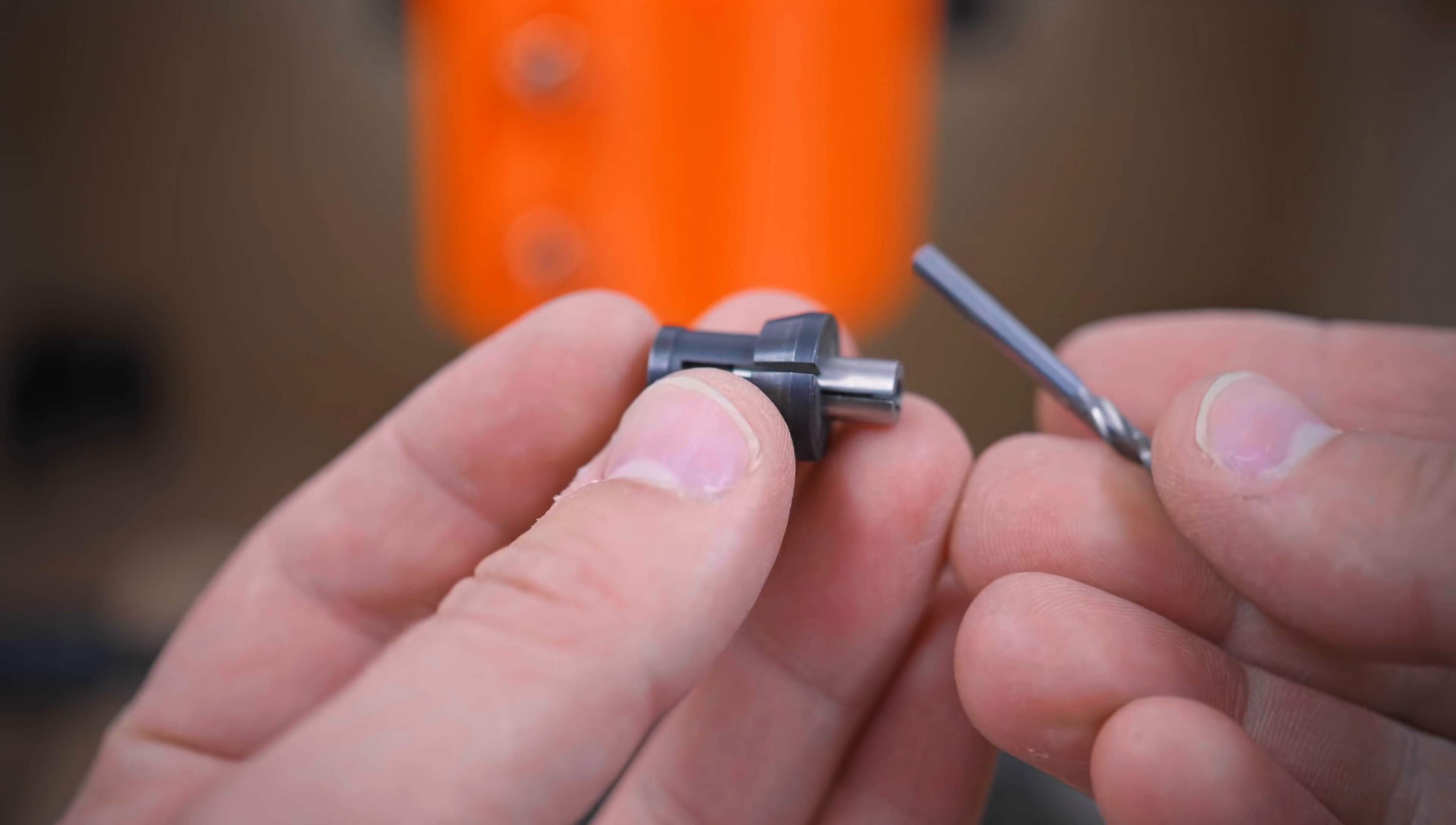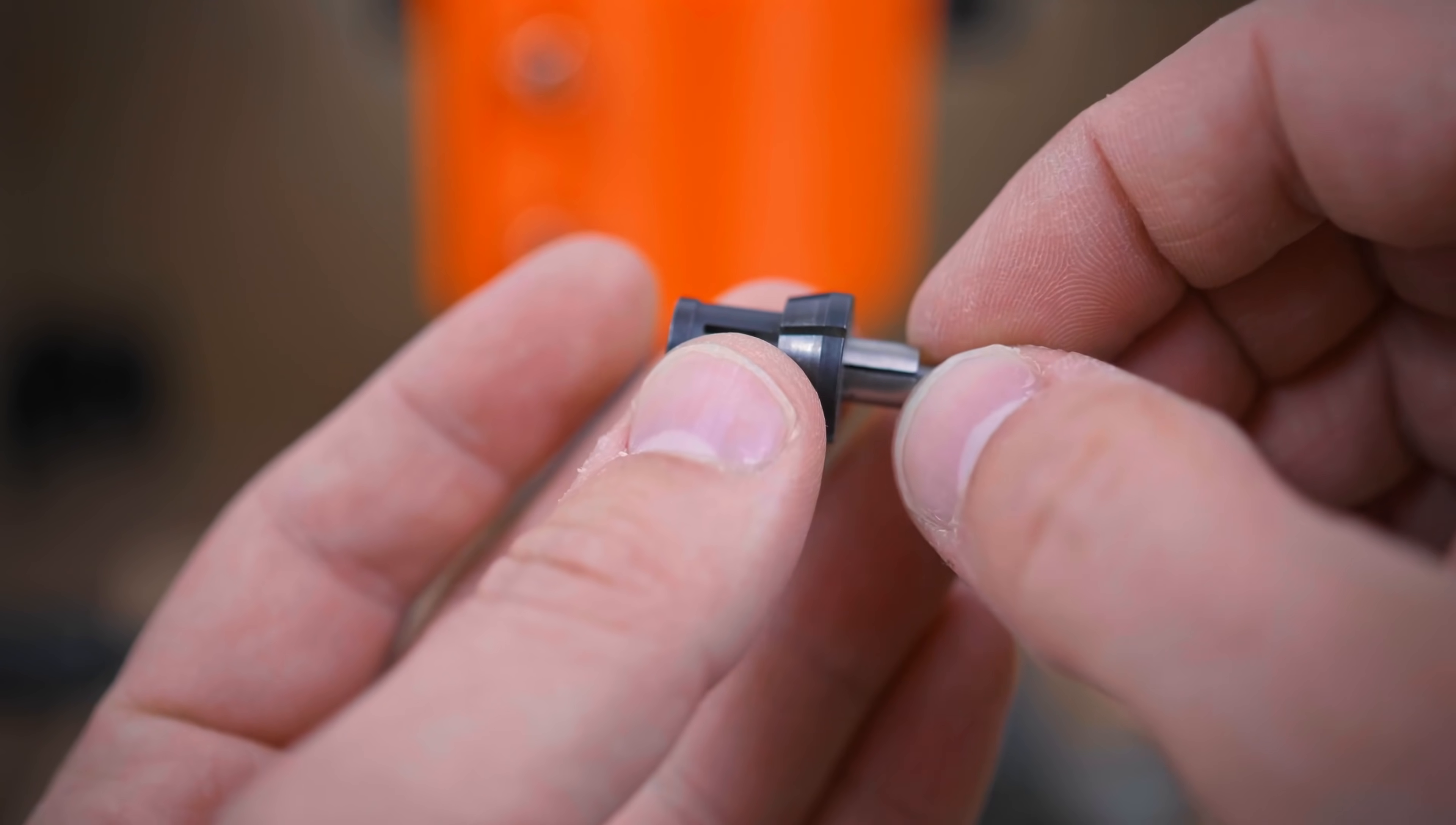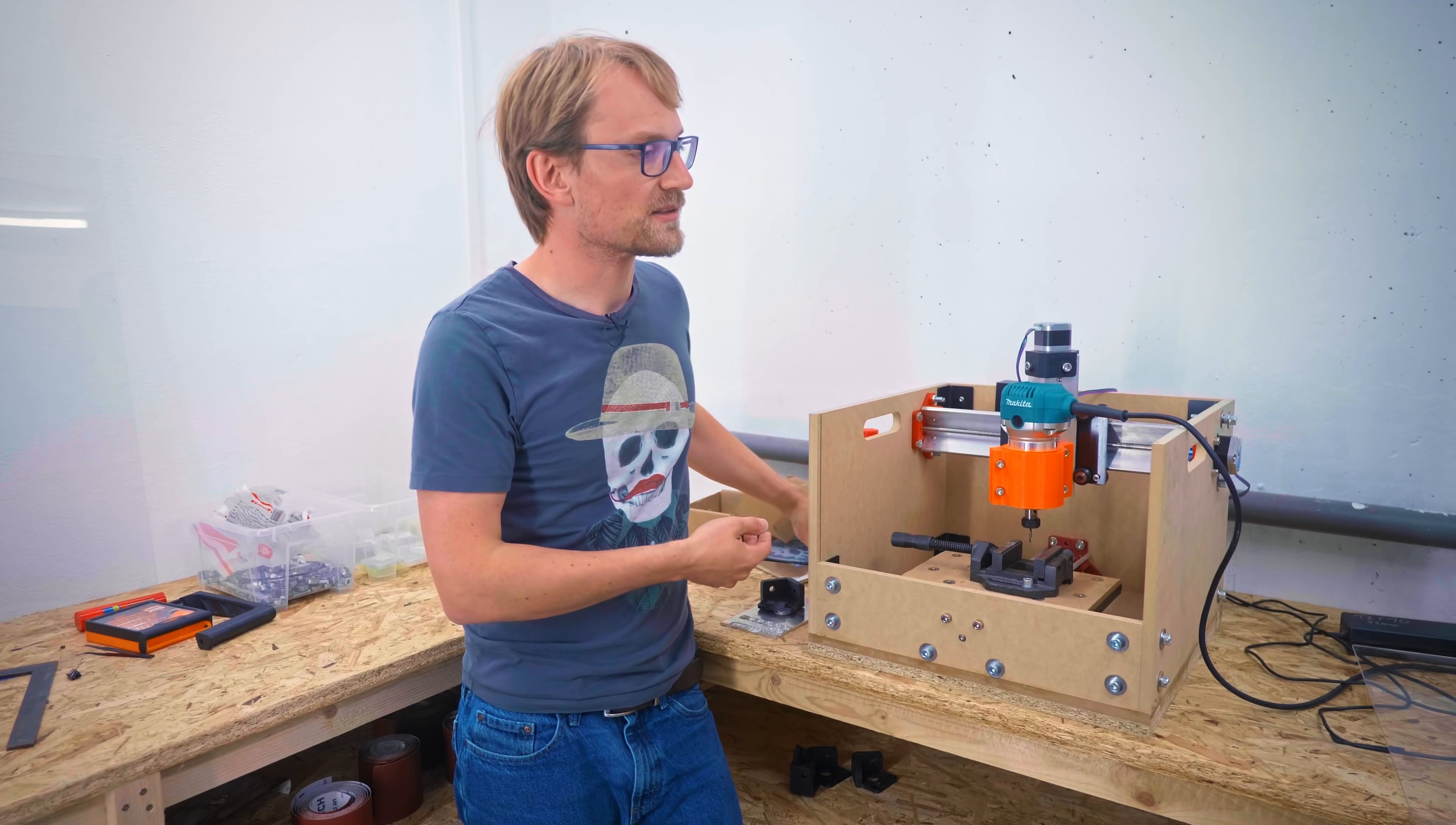If you don't know Winston Moy, go check him out, that guy's a wizard on the Carbide 3D machine, which punches in the same weight class as Bob. So okay, that's the router, or quote-unquote spindle, which cuts your workpiece.